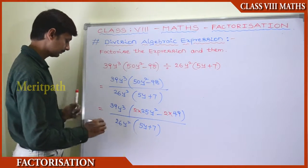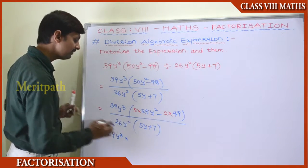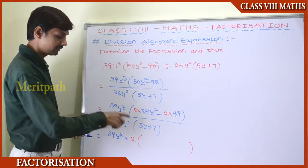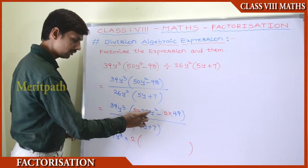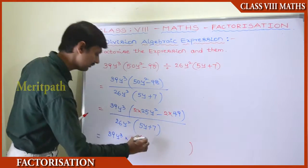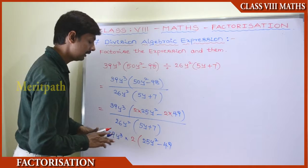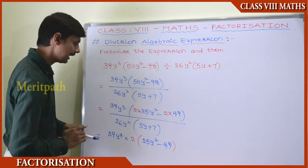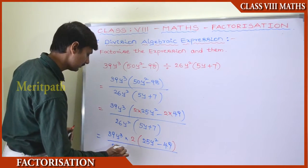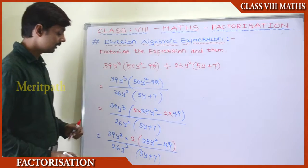We have taken 2 in common using the distributive property — 2 times the first term minus 2 times the next term — so we get 2(25y² − 49), divided by 26y²(5y + 7). Now we can observe there are common factors between the numerator and denominator.